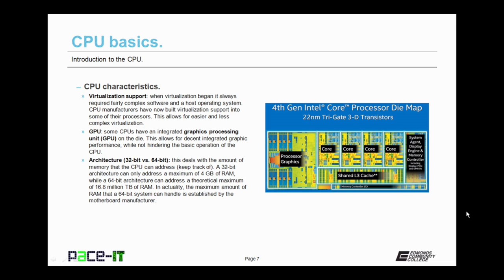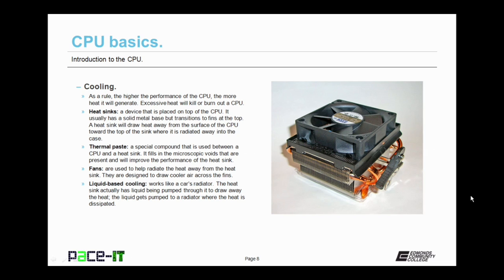While a CPU that has a 64-bit architecture can address a theoretical maximum of 16.8 million terabytes of RAM. Man, that is just a ton of RAM. In actuality, the maximum amount of RAM that a 64-bit system can handle is established by the motherboard manufacturer.